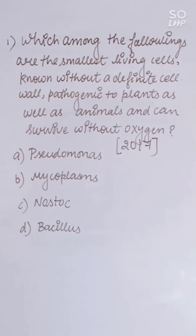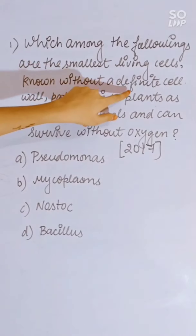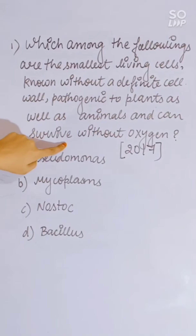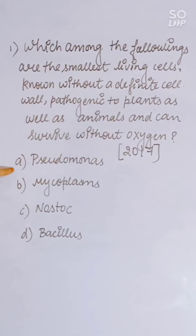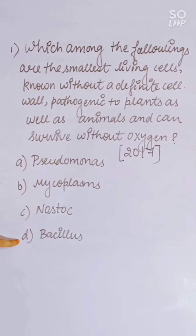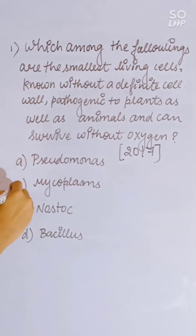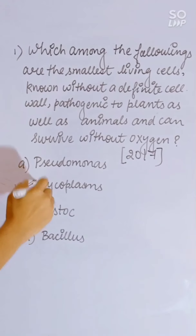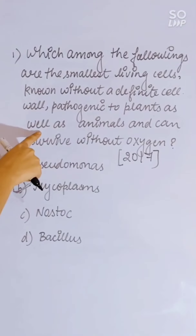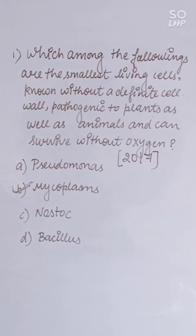NEET 2017 question: Which among the following is the smallest living cell, known without a definite cell wall, pathogenic to plants as well as animals, and can survive without oxygen? Options: Pseudomonas, Mycoplasma, Nostoc, or Bacillus. Correct answer is Mycoplasma — it lacks a definite cell wall, is pathogenic to both plants and animals, and can survive without oxygen.